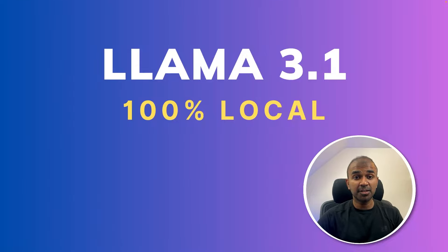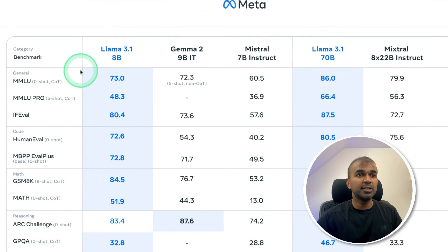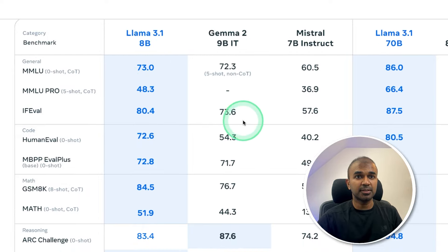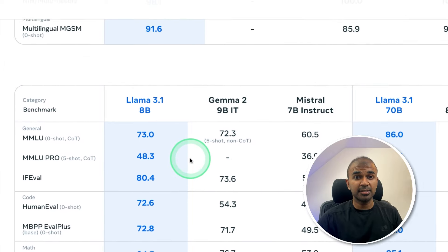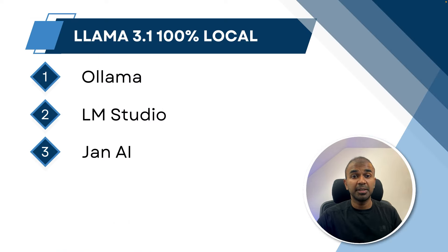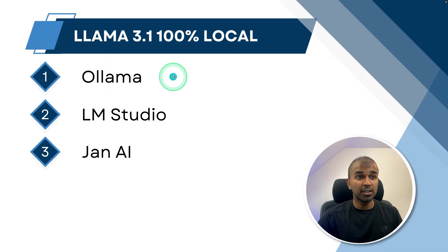This is amazing. Now we're going to see how you can run Llama 3.1 100% local on your computer — that is the 8 billion parameter model. Even Llama 3.1 8 billion parameter is far better than Gemma 2 9B and Mistral 7B Instruct. So if you want an AI assistant which is really good and you want to run locally on your computer, you could try Llama 3.1 8 billion parameter model. By the end of this video, you will know how you can run these AI models locally using Ollama, LM Studio, and JAN AI. Let's get started.